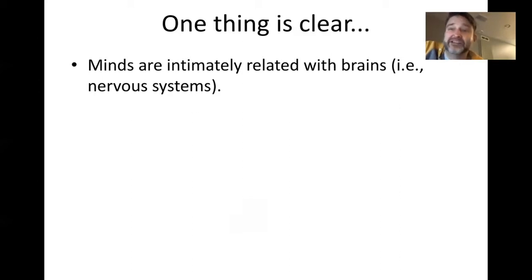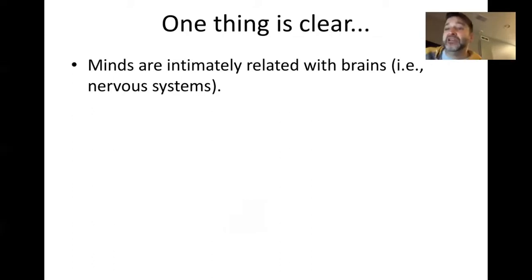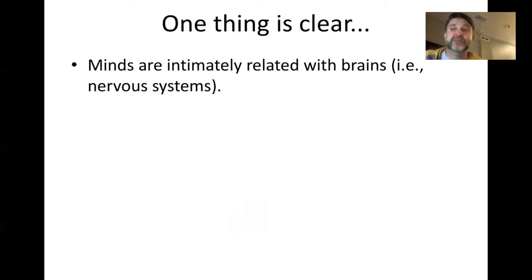We might think this brain extends out into our body — that it involves the nerves in our spinal cord and our peripheral limbs that feel experiences from the environment. This is a specific kind of biological organic setup. It seems that the minds we know — the minds of other humans, of other intelligent animals — are intimately related with their having brains. There may be some exceptions. Octopuses have massively distributed nervous systems and don't really have a brain in the same way we do. But in general, our best examples of minded entities — ourselves, our dogs, cats, horses, dolphins — are animals with brains.